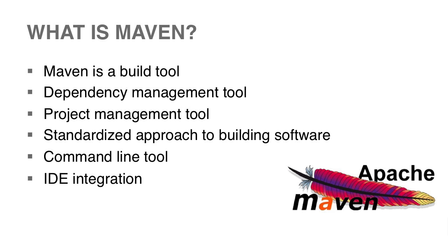Next, we'll talk about how Maven is a project management tool. Maven does allow us to include some information about the software we're building, such as the version number or who is working on it, and it also provides a good overview of what is being used within our project. Maven also provides a standard approach to building software. If we have five projects using Maven, we will see a consistent approach to each project, and that gains us some efficiencies just because the projects are so consistent.